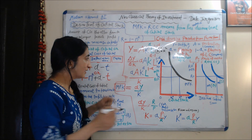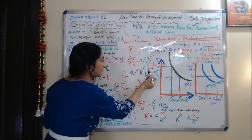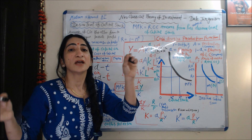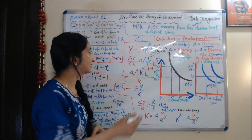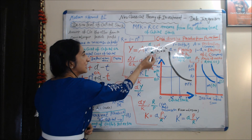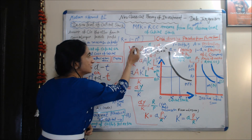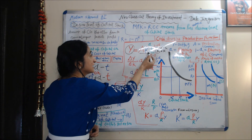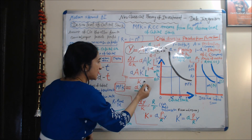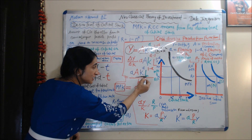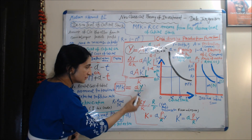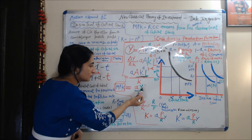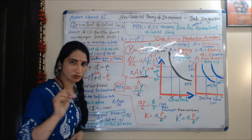Now, A times K to the power alpha times L to the power (1 minus alpha) — what is this? This is nothing but the Cobb-Douglas production function, which equals Y. So we replace this with Y. Our equation now becomes alpha times Y over K. This is the marginal product of capital: MPK equals alpha times Y over K.